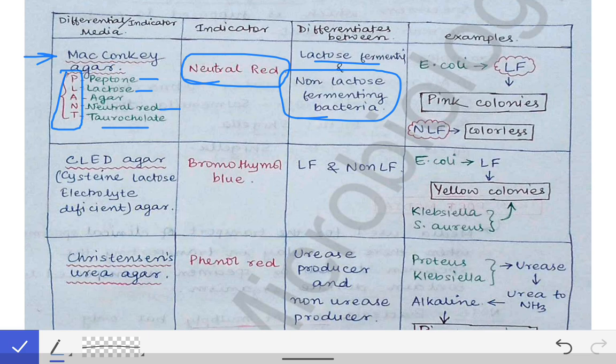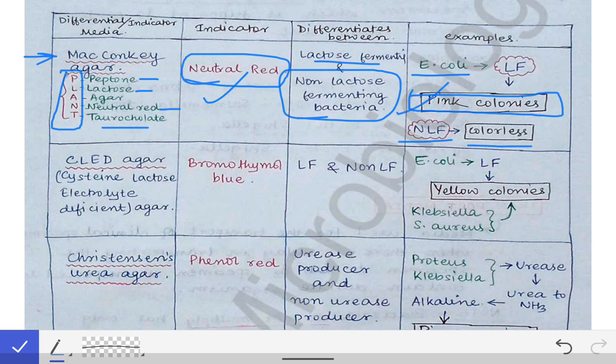For example, E. coli is a lactose fermenting bacteria. When E. coli grows on MacConkey agar, the color changes to pink — pink colonies are produced. Pink colored colonies on MacConkey agar indicate a lactose fermenting bacteria. If the colonies are colorless, that means it is a non-lactose fermenting bacteria. The indicator in MacConkey is neutral red.